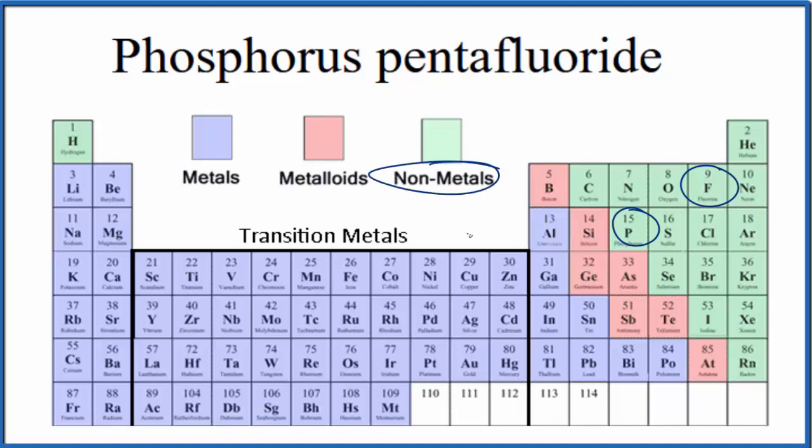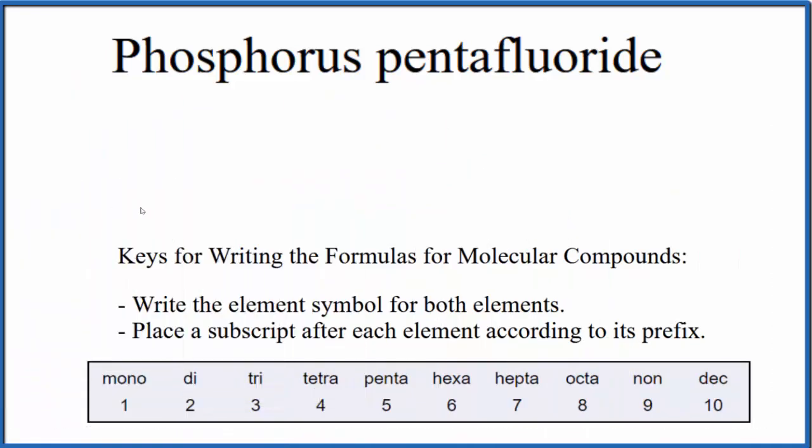Both of these are nonmetals. When we have two nonmetals, that means we have a molecular, also called covalent, compound. We can use these rules to write the formula for phosphorus pentafluoride.